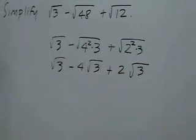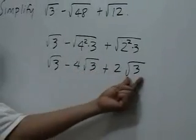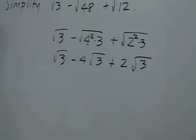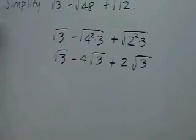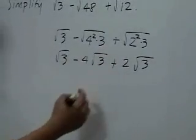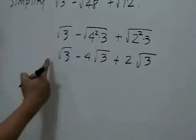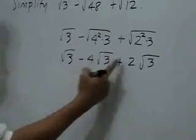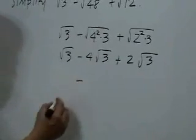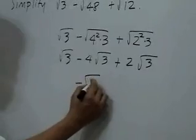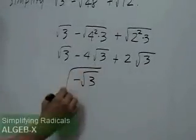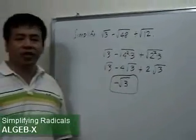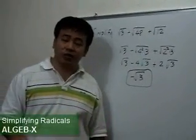As you can clearly see here, these three radicals are the same, sharing the same radicand 3. So we can use the distributive property and combine the square root of 3 terms. So you have 1 minus 4, that's negative 3, plus 2, that's negative 1, times square root of 3, or negative square root of 3. So this is the answer when you simplify square root of 3 minus square root of 48 plus square root of 12.